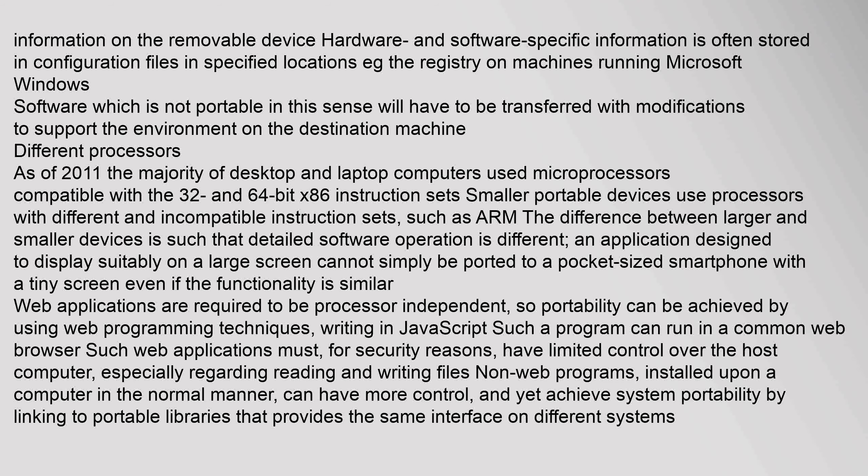As of 2011, the majority of desktop and laptop computers used microprocessors compatible with the 32 and 64-bit x86 instruction sets. Smaller portable devices use processors with different and incompatible instruction sets, such as ARM. The difference between larger and smaller devices means that detailed software operation differs — an application designed to display suitably on a large screen cannot simply be ported to a pocket-sized smartphone with a tiny screen, even if the functionality is similar.